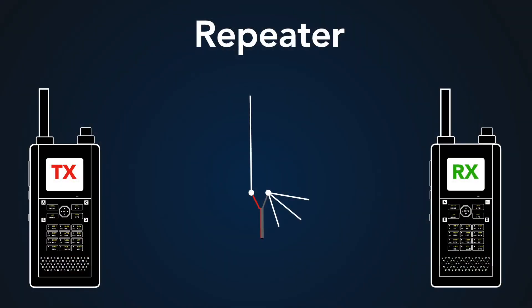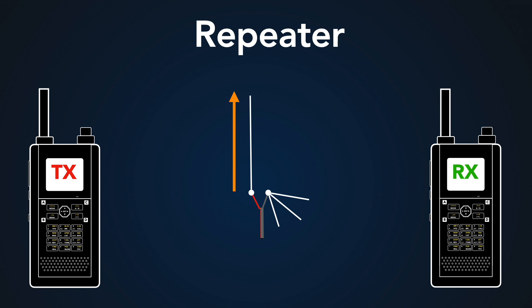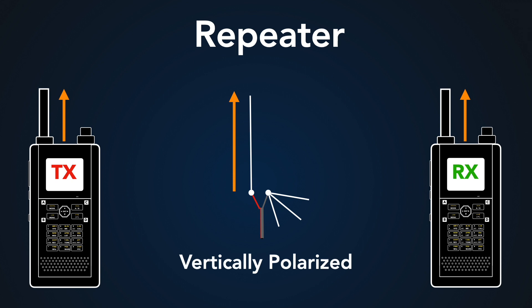Let's talk about repeaters and walk through how repeater communication takes place. You have your transmitting radio, your repeater — designated as an antenna in the middle — and then your receive frequency. Notice that repeaters have a vertical orientation to their antennas, so you want to make sure your antenna is aligned with the repeater's antenna. All of our antennas here are vertically polarized, and that makes a real difference in your communication.